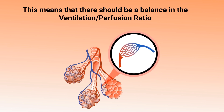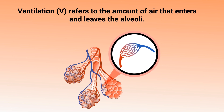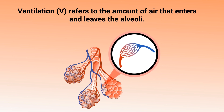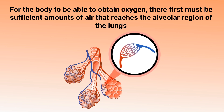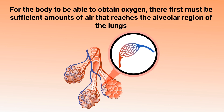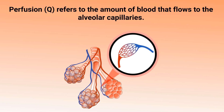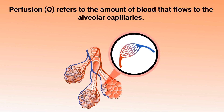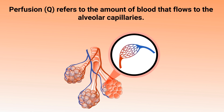This means that there should be a balance in the ventilation to perfusion ratio. Ventilation refers to the amount of air that enters and leaves the alveoli. For the body to be able to obtain oxygen, there first must be sufficient amounts of air that reaches the alveolar region of the lungs. Perfusion, on the other hand, refers to the amount of blood that flows to the alveolar capillaries.